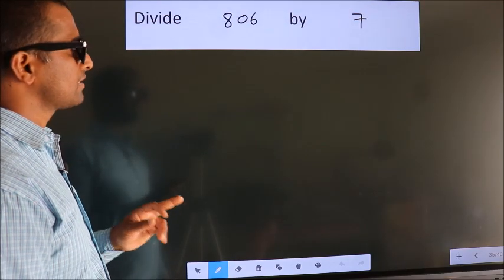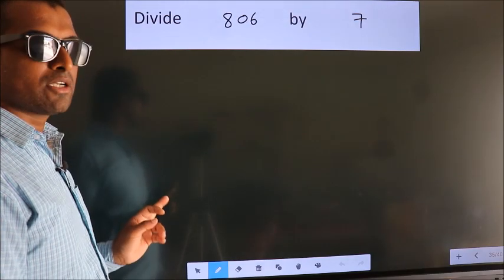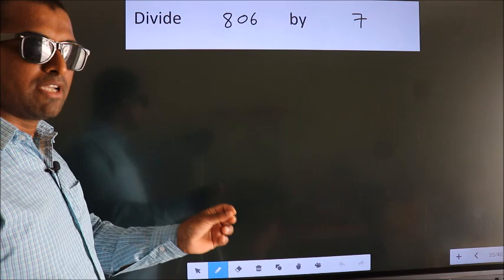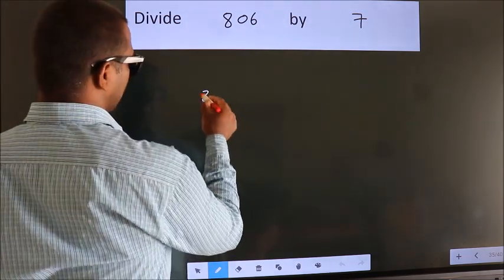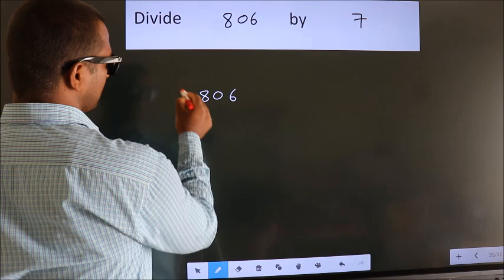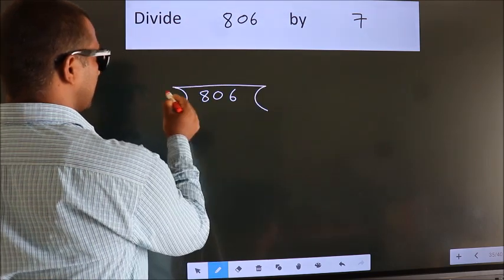Divide 806 by 7. To do this division, we should frame it in this way. 806 here, 7 here.